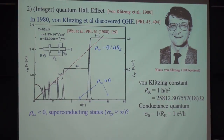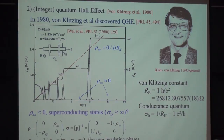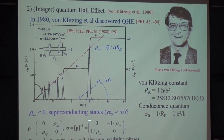Now the question is that we have zero resistance — is this a superconductor or not? However, it's actually an insulating phase, because if you look at the inverse of the resistance tensor, when we have this kind of resistance, we have zero conductance along the longitudinal direction, so it's actually an insulating state.